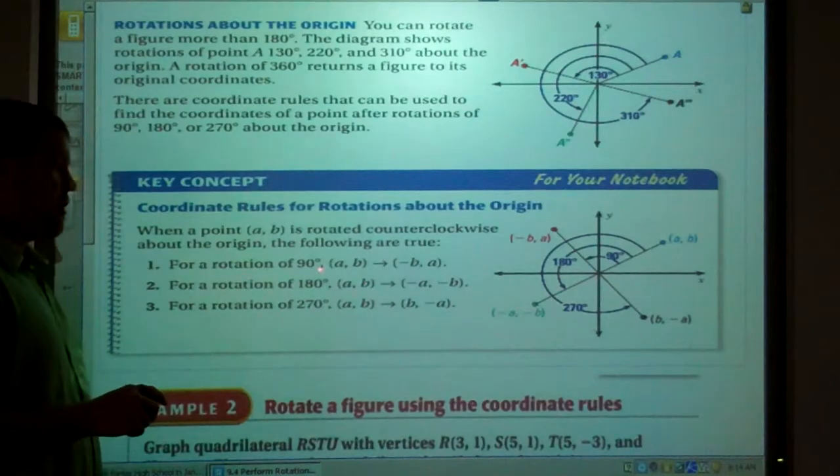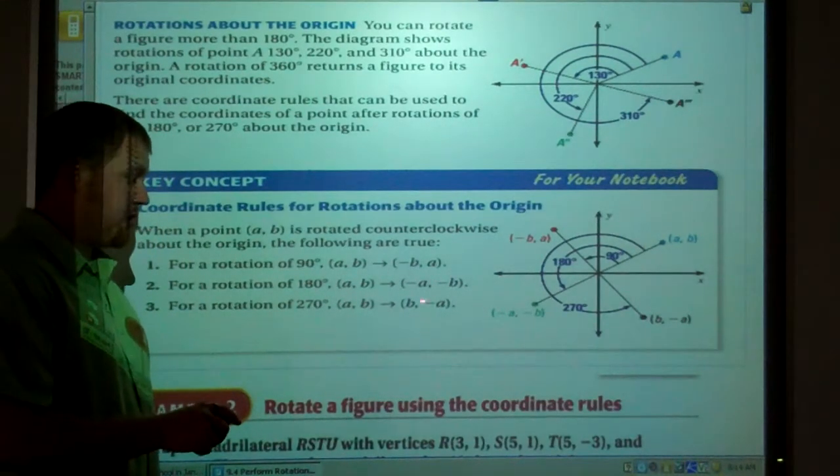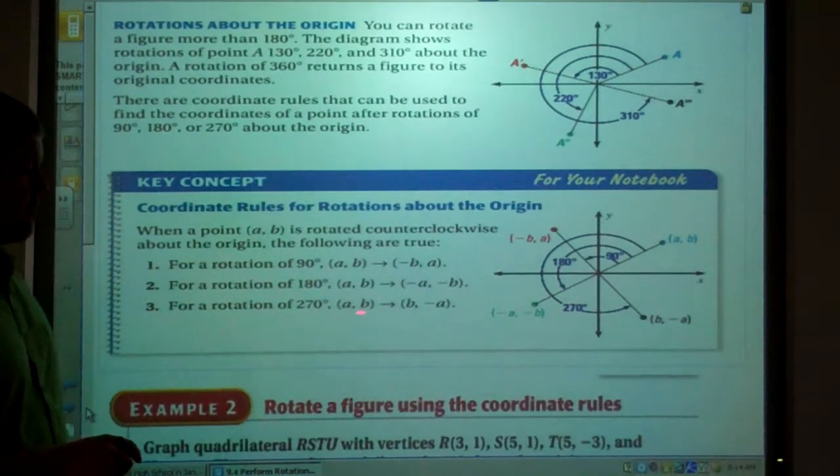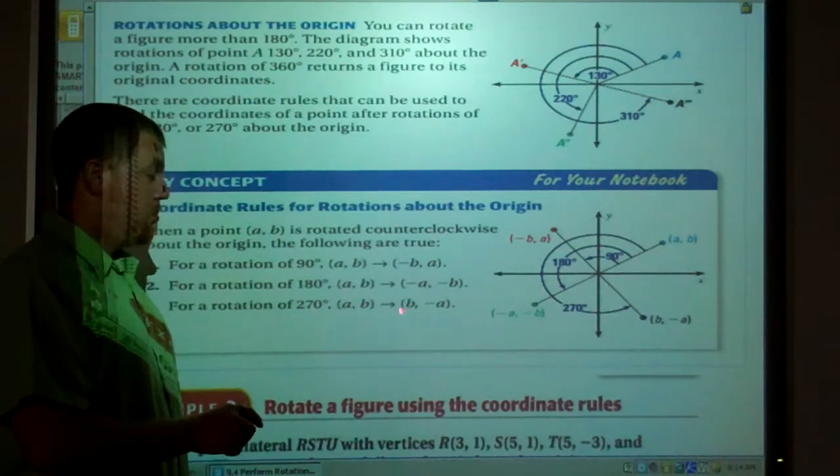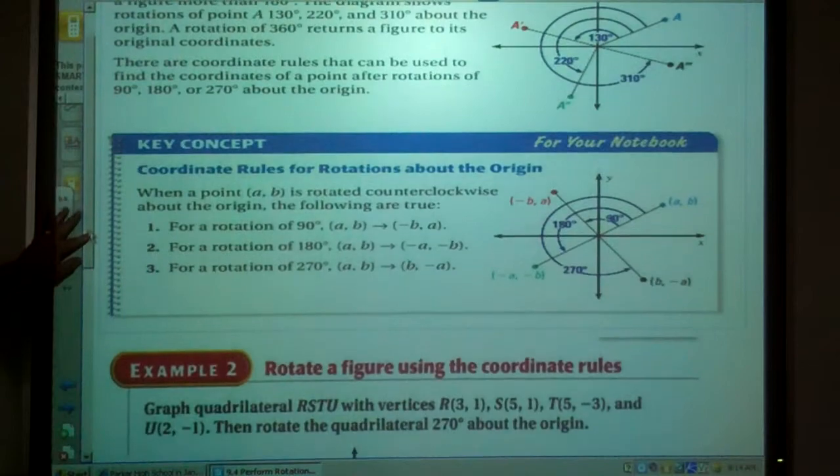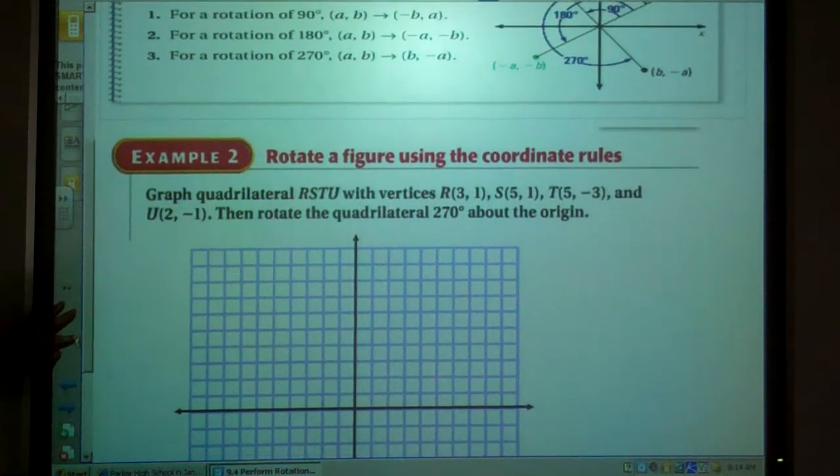For a 180 degree rotation for any point (a, b), it's the opposite of a, the opposite of b. And for a 270 degree rotation for any point (a, b), it's b, and then the opposite of a. I'll show you an example of one of those here, right now.